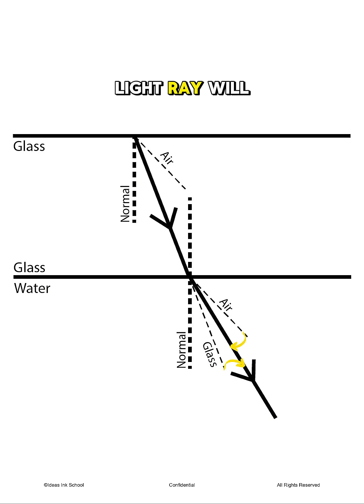As a result, the refracted light ray will appear in the area bounded by the two dotted lines that depict the speed of light in glass and air respectively.